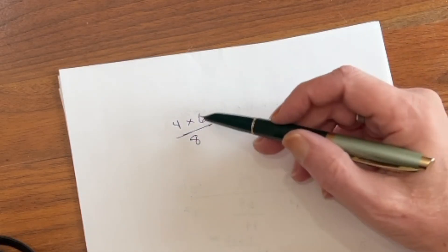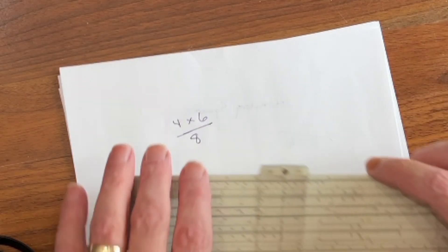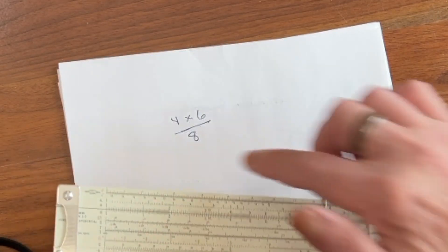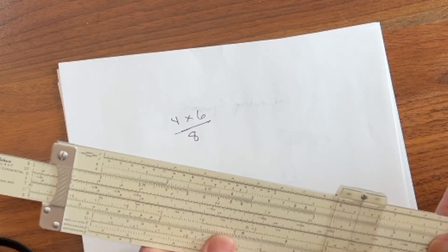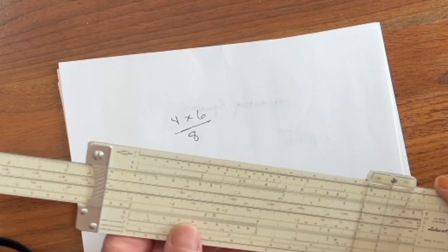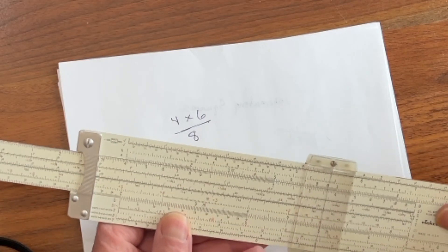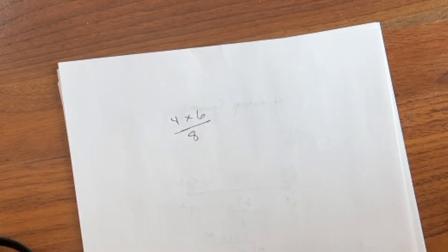Alright, so we're used to solving problems like this on the slide rule, and the way that we would do this is we would come out here to 4. We would divide it by 8, which means we put the 8 over the 4. And then we would multiply it by 6 and come up with our answer, 3. However, there's an easier way to do that.